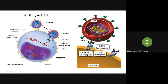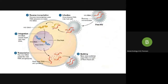HIV is known as a retrovirus because it carries RNA. Once it comes in contact with the CD4 cell as explained, HIV ejects its single-stranded RNA into the cytoplasm — the virus injects its genetic material into the host cell.